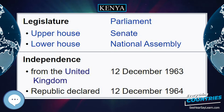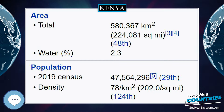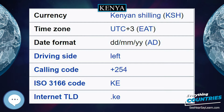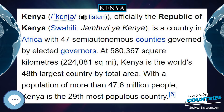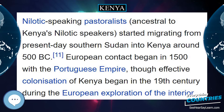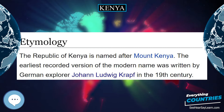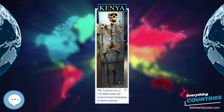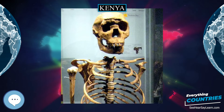Kenya is bordered by South Sudan to the northwest, Ethiopia to the north, Somalia to the east, Uganda to the west, Tanzania to the south, and the Indian Ocean to the southeast. Nilotic-speaking pastoralists ancestral to Kenya's Nilotic speakers started migrating from present-day southern Sudan into Kenya around 500 BC. European colonization of Kenya began in the 19th century during the European exploration of the interior. The modern-day Kenya emerged from a protectorate established by the British Empire in 1895 and the subsequent Kenya Colony which began in 1920. Numerous disputes between the UK and the colony led to the Mau Mau Revolution, which began in 1952 and the subsequent declaration of independence in 1963. After independence, Kenya remained a member of the Commonwealth of Nations. The current constitution was adopted in 2010 to replace the 1963 independence constitution.